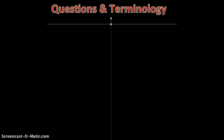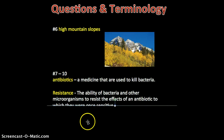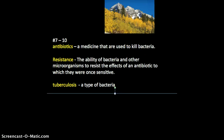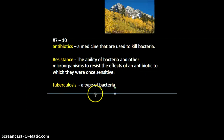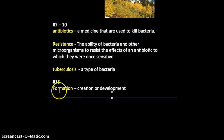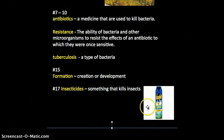Here's vocabulary to help with your next questions. Number six asks about high mountain slopes — here is the slope of a mountain, think about the slope of a line on a graph, referring to the top or high part of the mountain slope. Numbers seven through ten are about antibiotics, which are medicines used to kill bacteria. Resistance is the ability of bacteria and other microorganisms to resist the effects of an antibiotic to which they were once sensitive — this refers to mutations in the next generation of bacteria. Tuberculosis is a type of bacteria that can make you very sick, and you actually get a vaccine for it. Number 15 covers formation, meaning the creation or development. And insecticide is something that kills insects, like Raid.